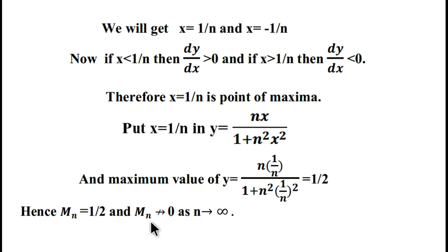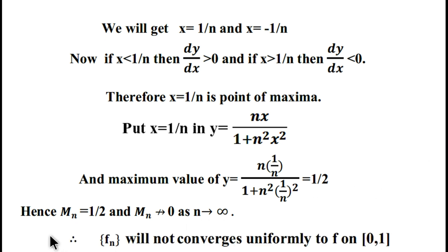Since M_n = 1/2 does not converge to zero as n approaches infinity, f_n will not converge uniformly to f on the closed interval [0, 1]. So you can easily check uniform convergence with the help of the M_n test. Thanks for watching.